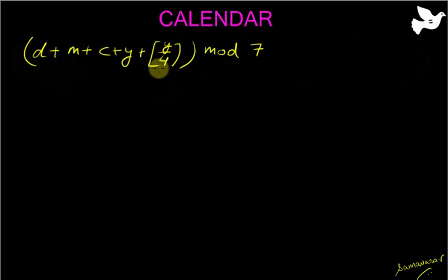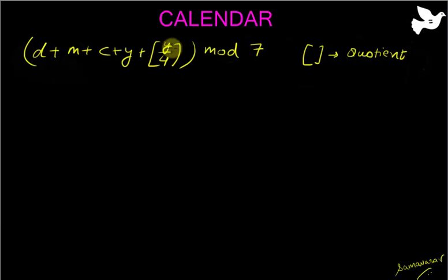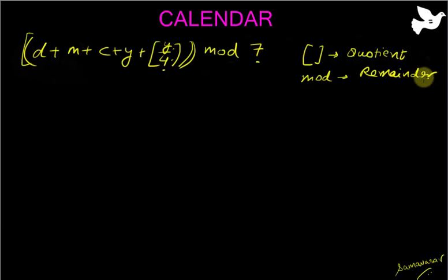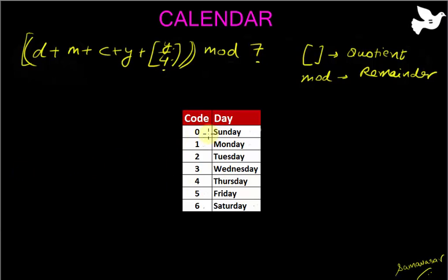I will explain all of this. First you need to understand two mathematical operations. The floor bracket means taking the quotient — you take y, divide by 4, and whatever quotient you get, you put it in. Once you take this entire expression, you divide it by 7 and take the remainder — modulus is for the remainder. Once you get that answer, you simply check this table: 0 means Sunday, 1 means Monday, 2 Tuesday, and so on; 6 means Saturday.